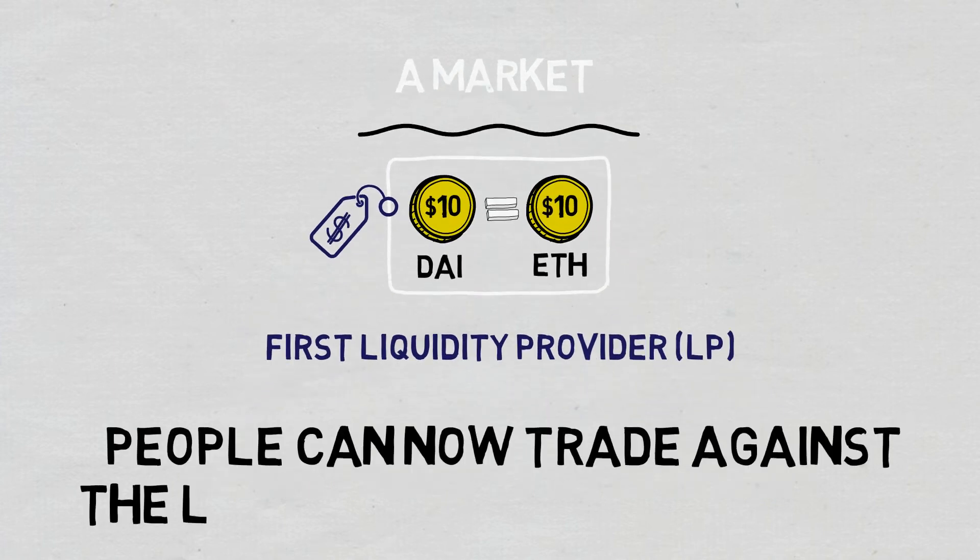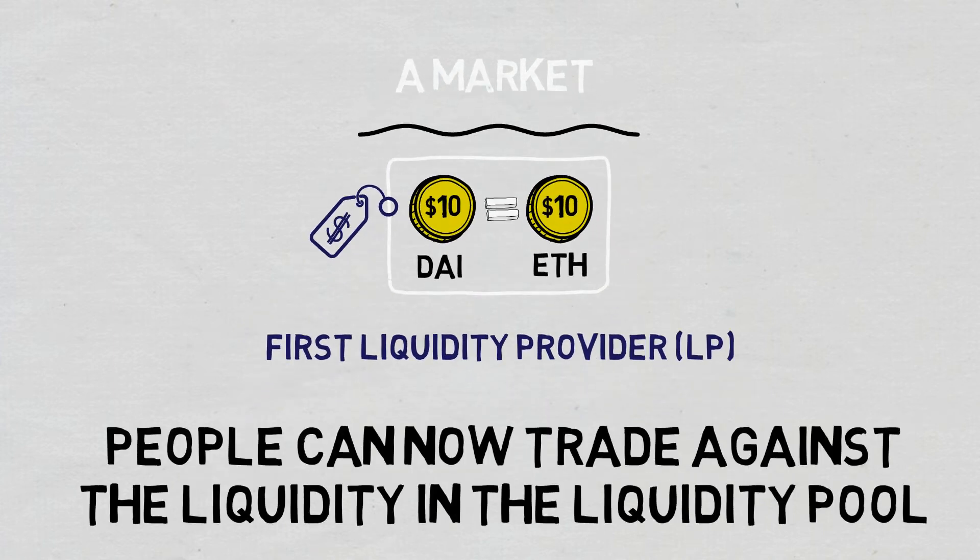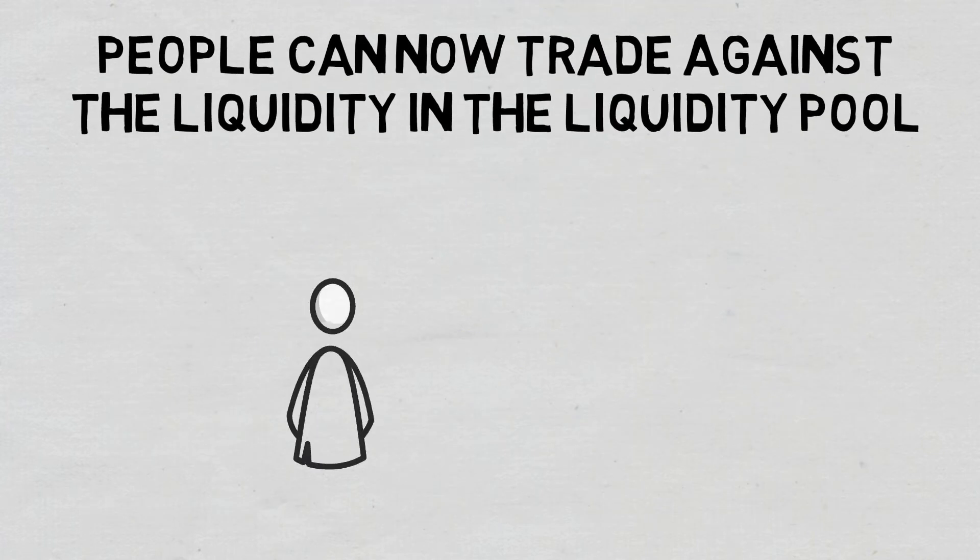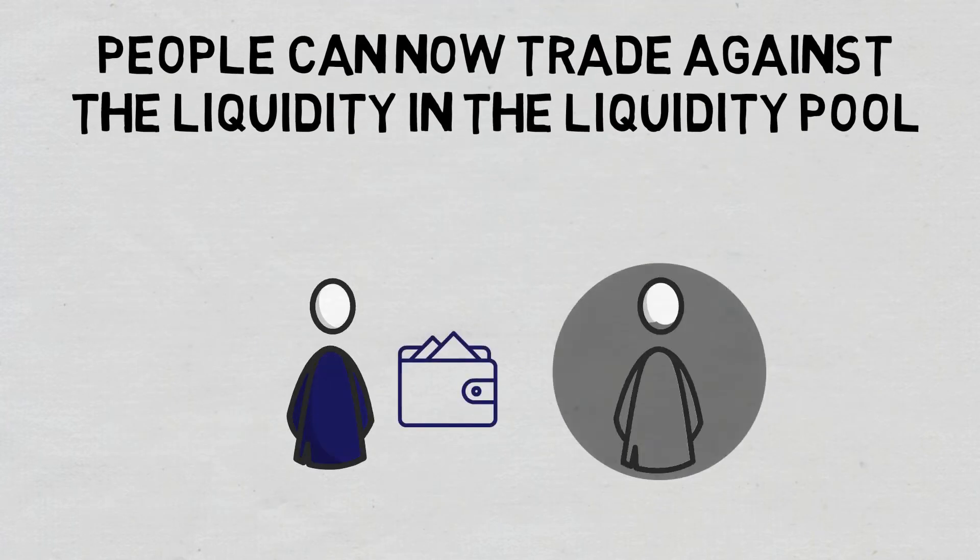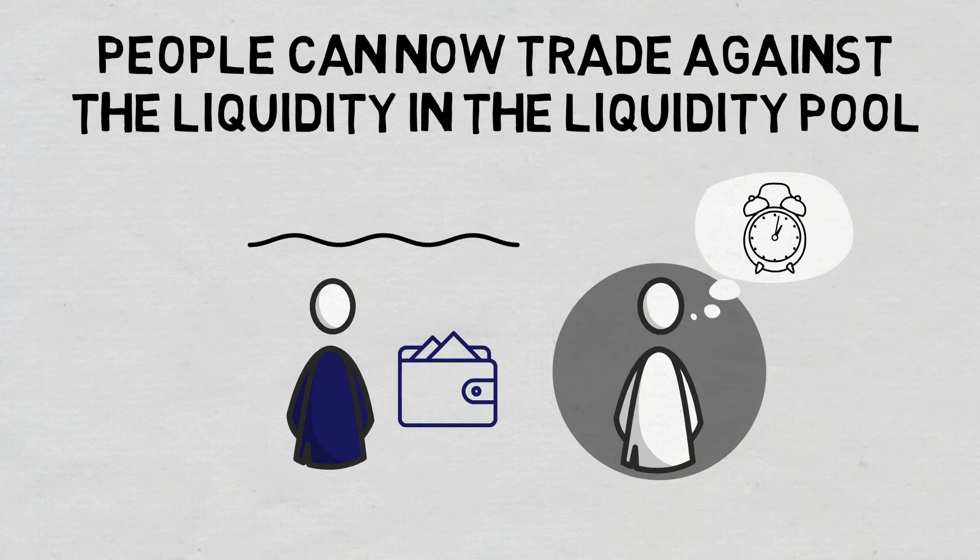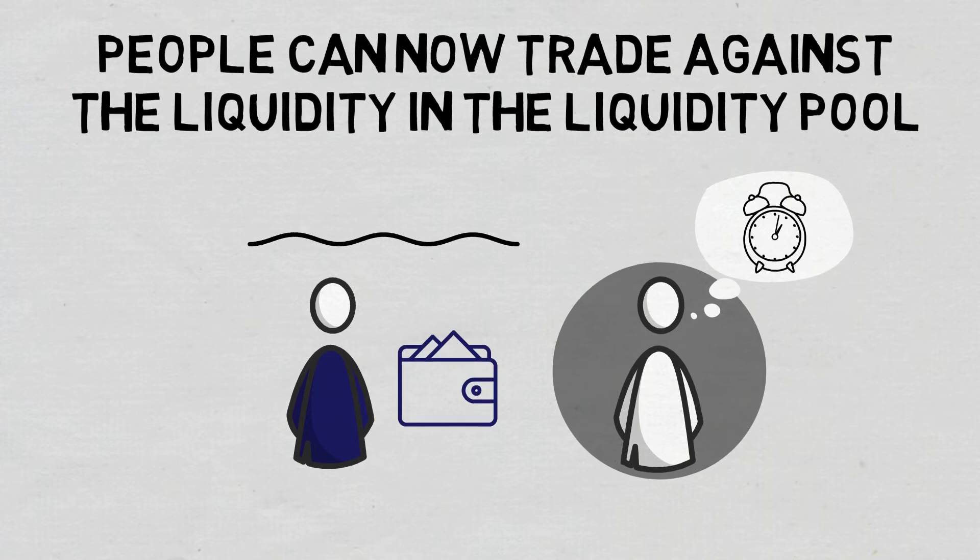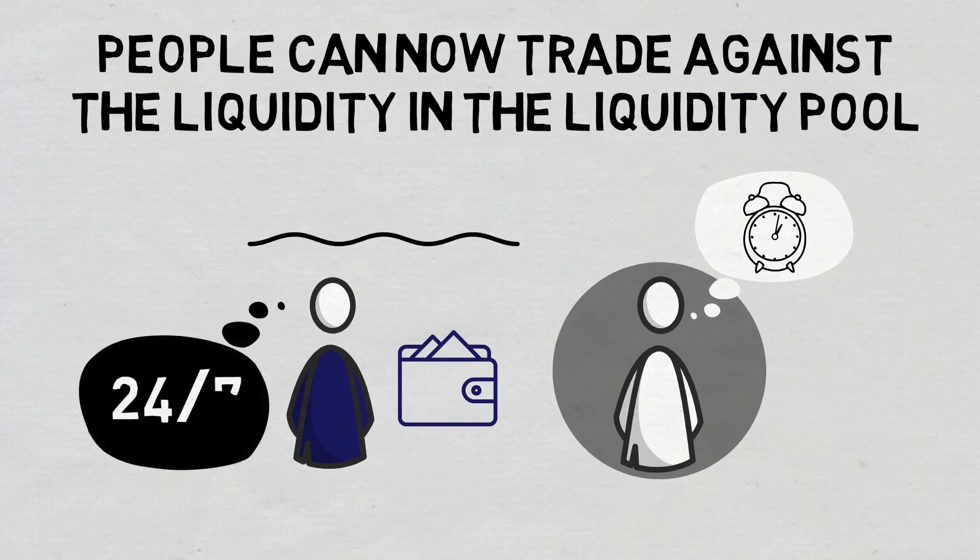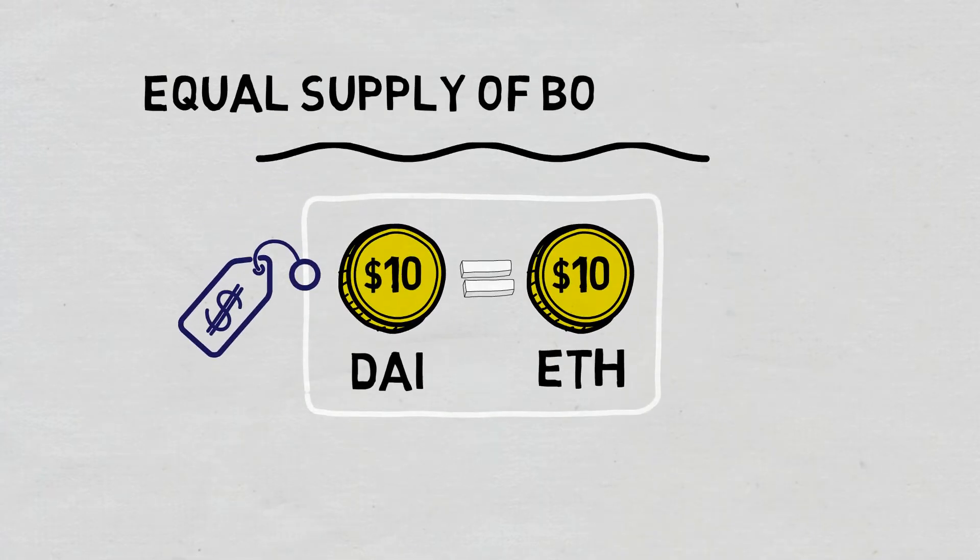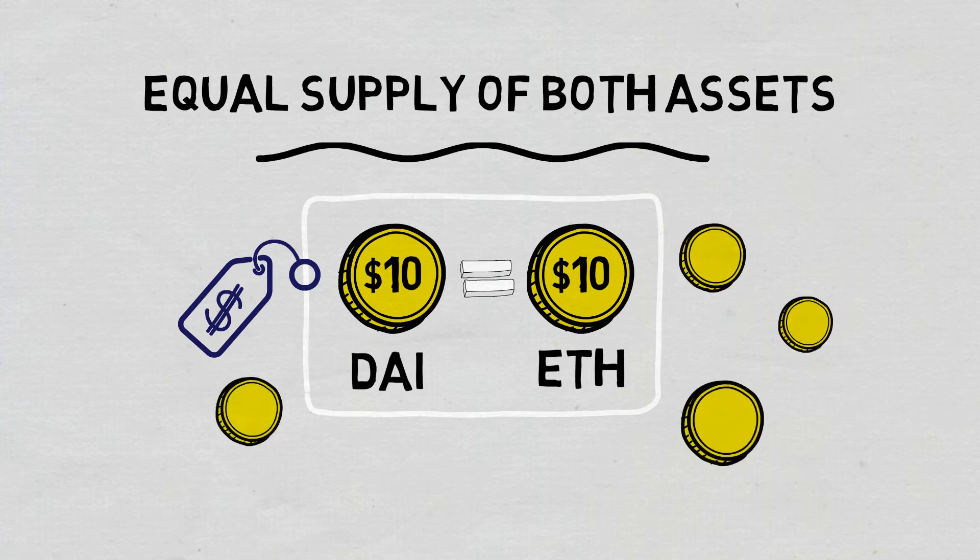So people can now trade against the liquidity in the liquidity pool. For the buyer to buy, there doesn't need to be a seller at that particular moment, only sufficient liquidity in the pool. This further means the liquidity pool allows traders to trade against those funds 24/7. The concept of an equal supply of both assets is the same for all the other liquidity providers who want to supply liquidity to the pool.